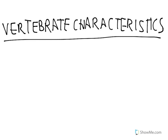Hello, my name is Connie Liu. I'm an undergraduate at MIT, and today we're going to be talking about vertebrate characteristics. Vertebrate is a word derived from the word vertebrae, which means backbone, and that basically gives you a general idea of what a vertebrate is — it's an animal with a backbone.